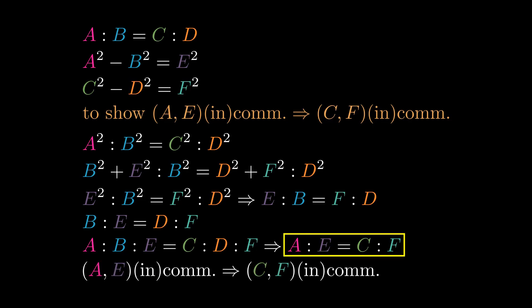Thus, if A and E are commensurable, so are C and F. And if A and E are incommensurable, so are C and F.